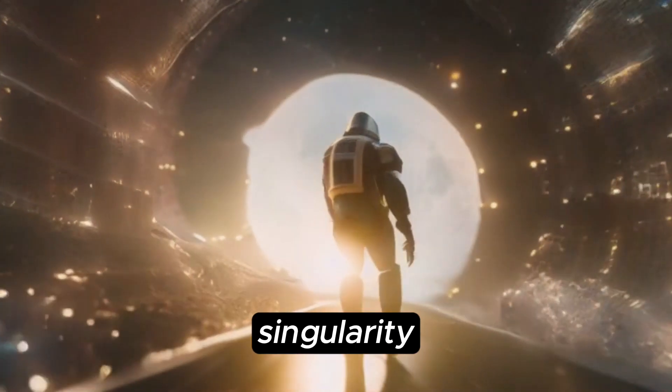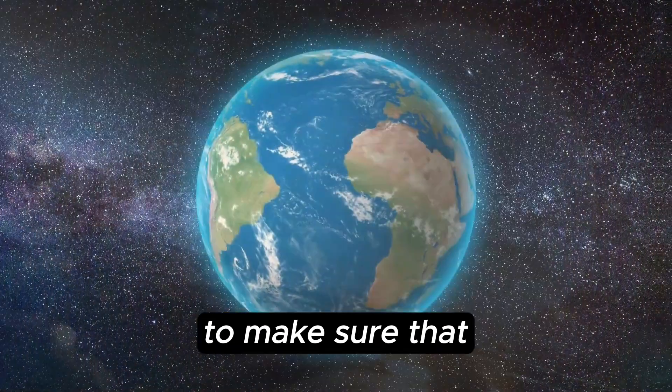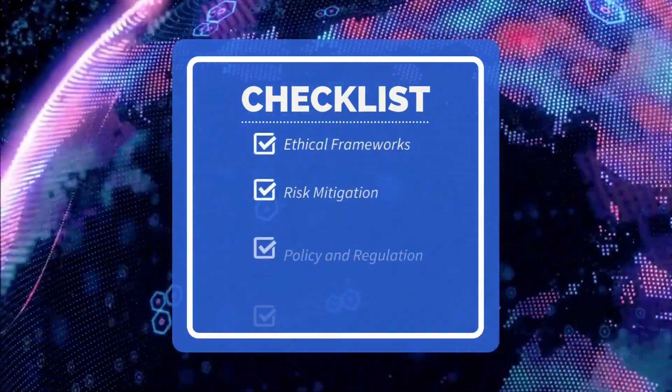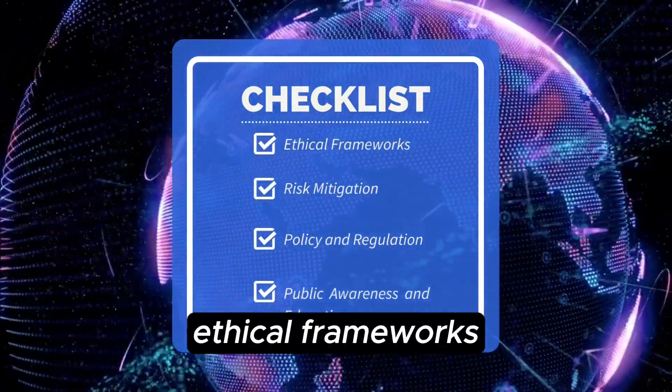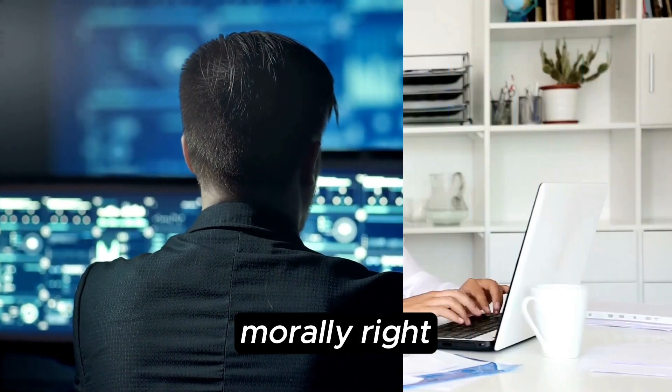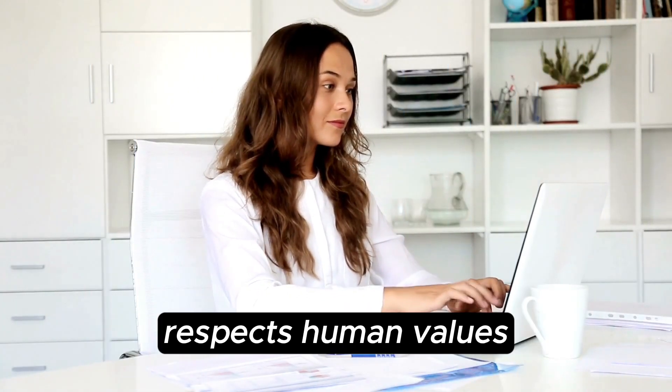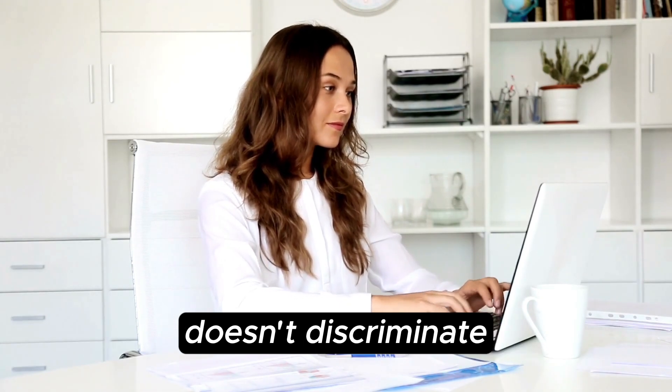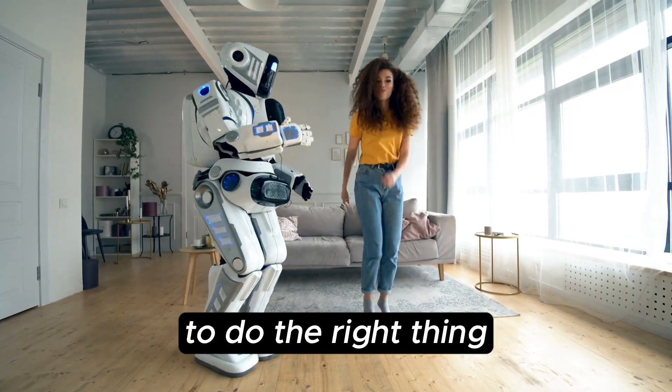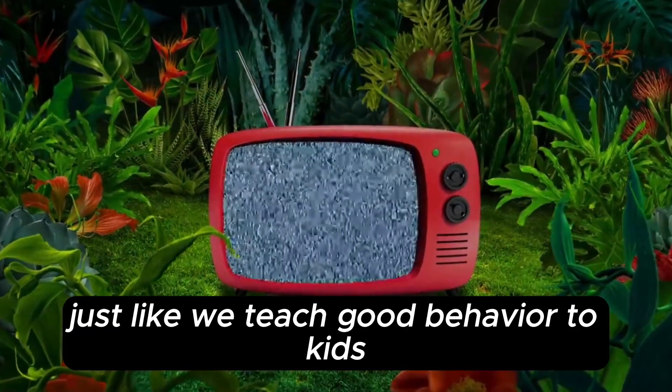Preparing for the AI singularity involves several important steps to make sure that artificial intelligence benefits humanity and doesn't pose risks. First, there's a need for ethical frameworks. Ethical AI development means creating AI systems in a way that's morally right. We should make sure that AI respects human values, doesn't discriminate, and makes ethical decisions. Think of it as teaching AI to do the right thing, just like we teach good behavior to kids.